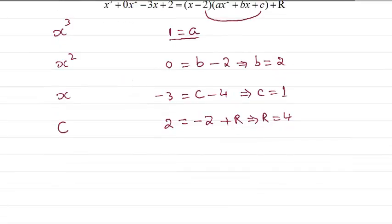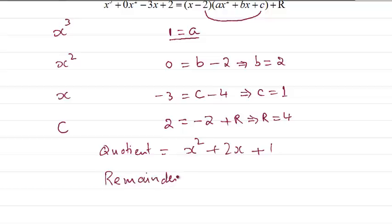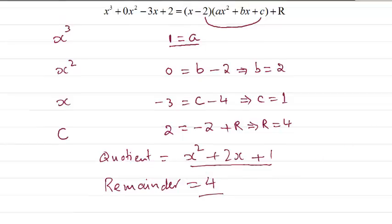So the quotient equal to x squared plus 2x plus 1, remainder equal to 4.